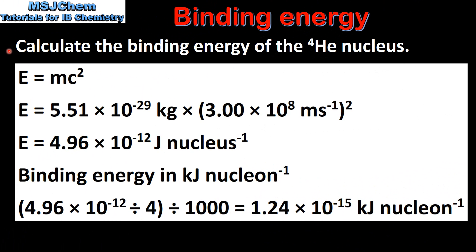Next we look at an example. Calculate the binding energy of the helium-4 nucleus. To calculate the binding energy we'll use the equation E equals MC squared. In a previous video we calculated the mass defect of the helium-4 nucleus, which is 5.51 times 10 to the negative 29 kilograms.